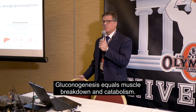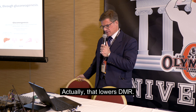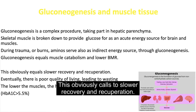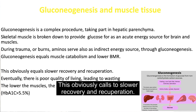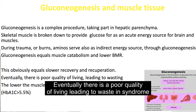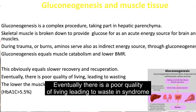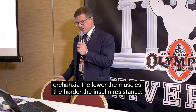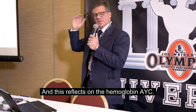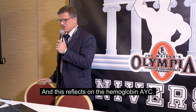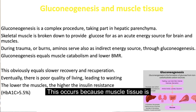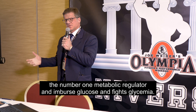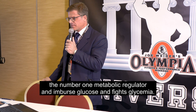Gluconeogenesis equals muscle breakdown and catabolism, which lowers BMR. This is catastrophic — it can lead to slower recovery and recuperation. Eventually, there is poor quality of living, leading to wasting syndrome or cachexia. The lower the muscle mass, the higher the insulin resistance, and this reflects on the hemoglobin A1c. This occurs because muscle tissue is the number one metabolic regulator and takes up glucose, fighting glycemia.